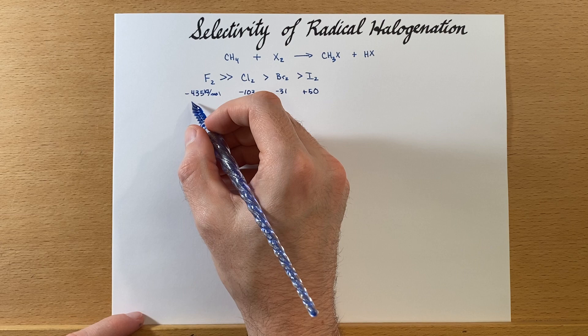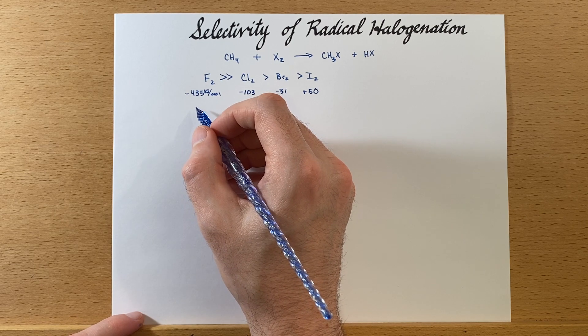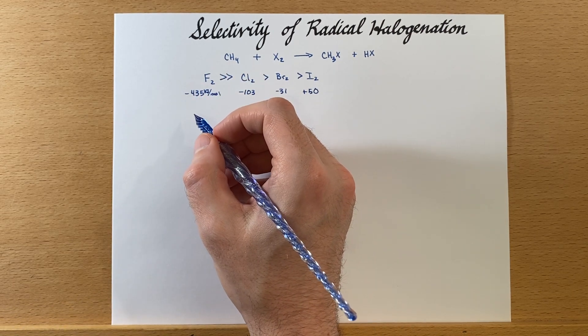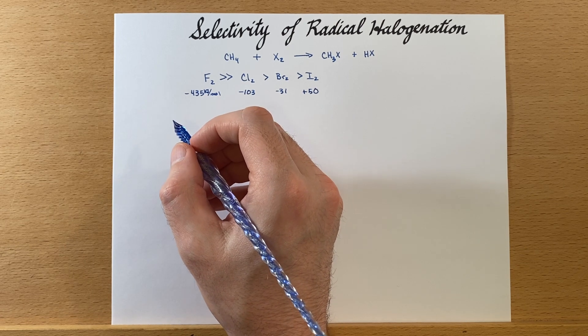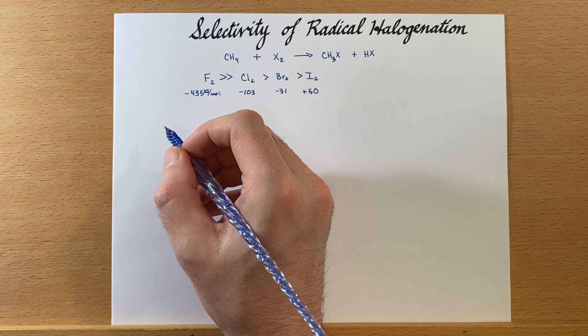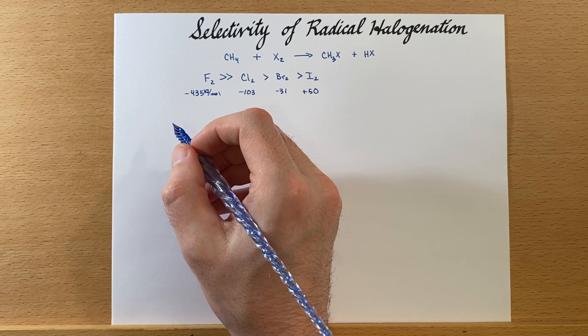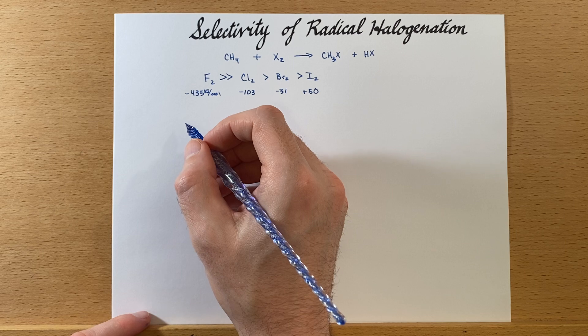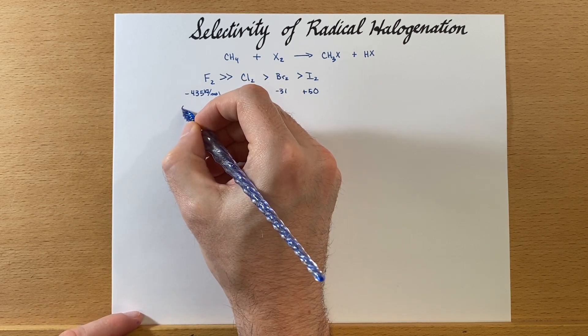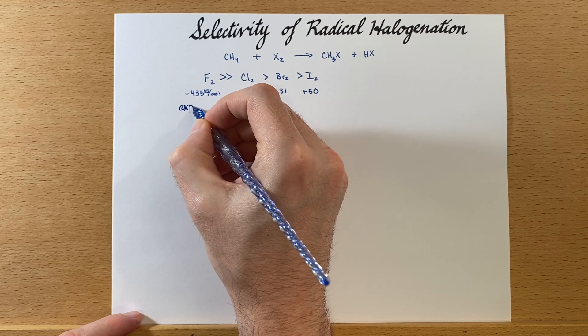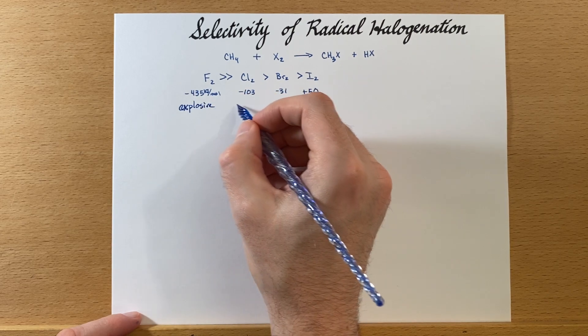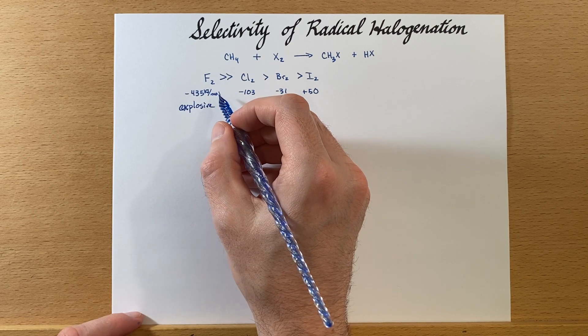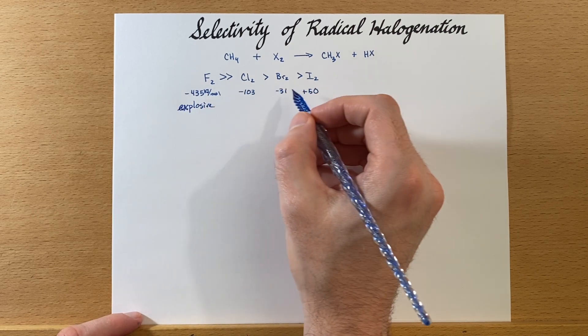Fluorine tends to be very explosive or at least difficult to control. Part of that is just because that carbon-fluorine bond is exceptionally strong, which is why it makes very tough polymers like Teflon. You will generally see chemists avoid adding fluorine to organic compounds because of that explosive tendency.